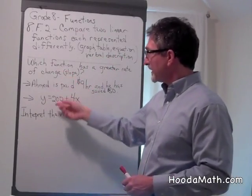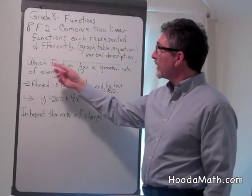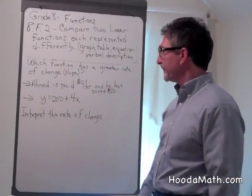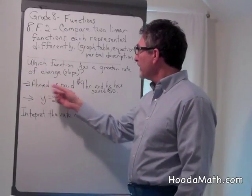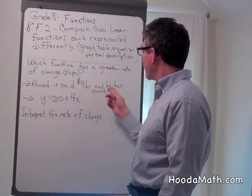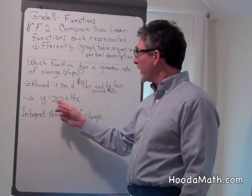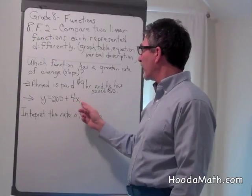So let's look at this example. We want to find out which function has a greater rate of change, or slope. Ahmed is paid $9 per hour and he has saved $50. And the equation, y equals 200 plus 4x.